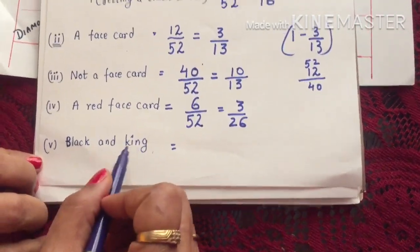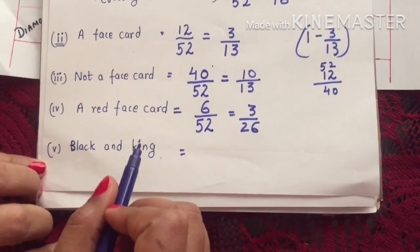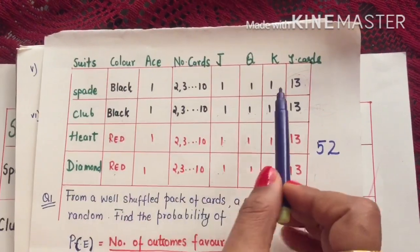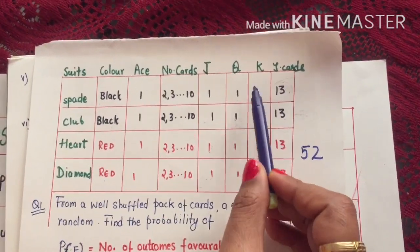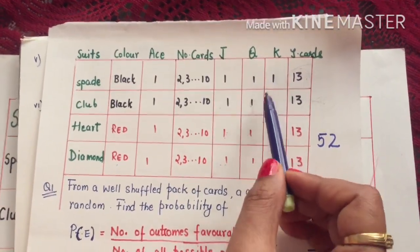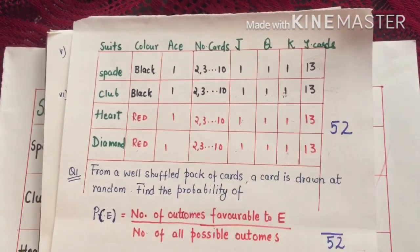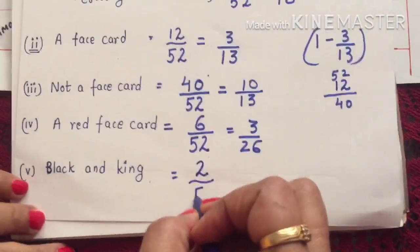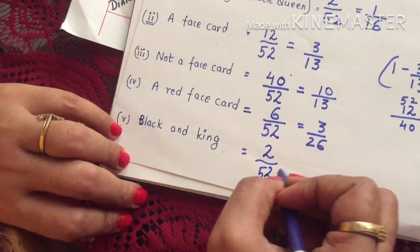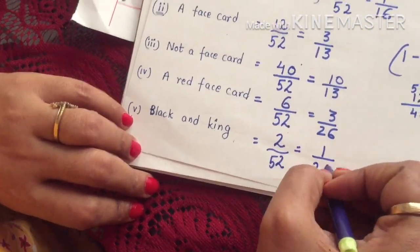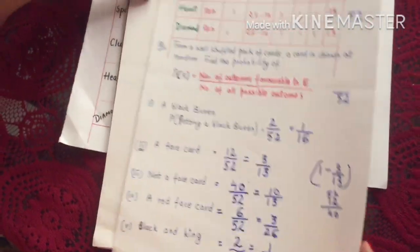Next: probability of getting a black king — meaning a card that is both black and a king. Looking at the black suits, there are two black kings — one in Spade and one in Club. Favorable outcome is 2 and possible outcomes are 52, so this gives 2/52 which is 1/26.